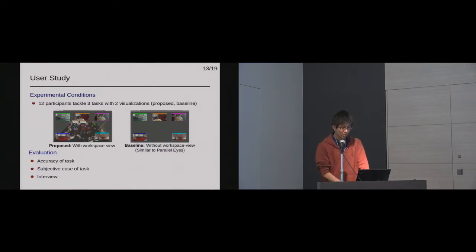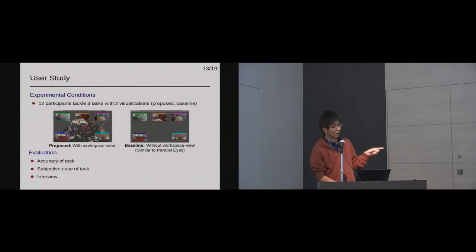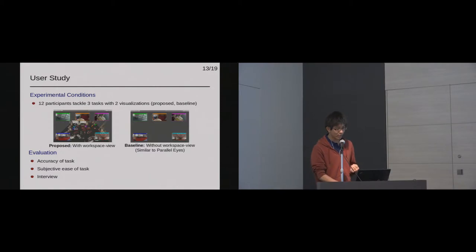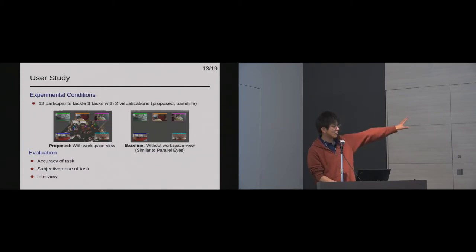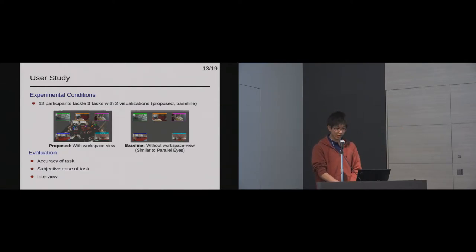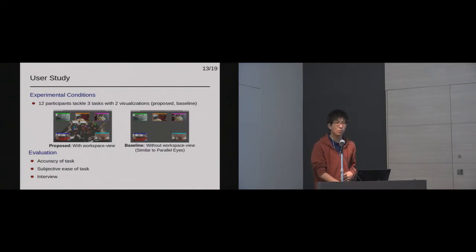Our experimental condition: 12 participants were recruited and they tackled 3 experimental tasks with 2 visualization methods. One is the proposed visualization with workspace view, and the other is the baseline visualization without workspace view, which is a similar setting to Parallel Eyes. The evaluations for the user study are accuracy of task, subjective ease of task scored by each participant with 7 grades, and interviews about the use cases of each visualization.